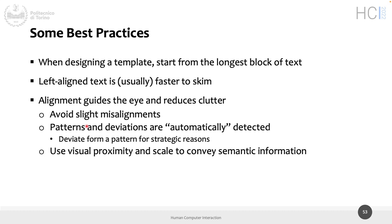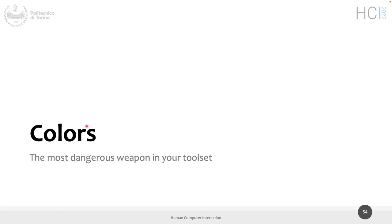Avoid misalignment — deviations are detected because they are incoherent. When you want to deviate, do it for a reason, such as to indicate hierarchy. Use proximity and scale to convey meaning or strong relationships between elements, and also to separate things that are related to other items. That is about alignment.